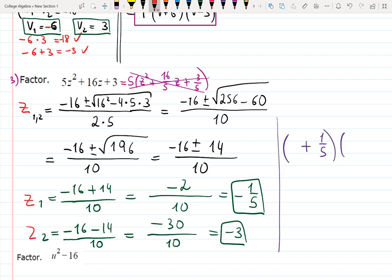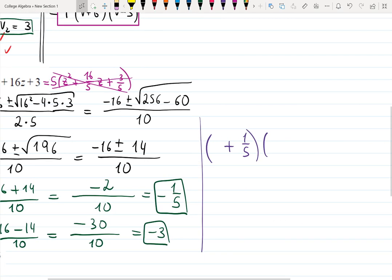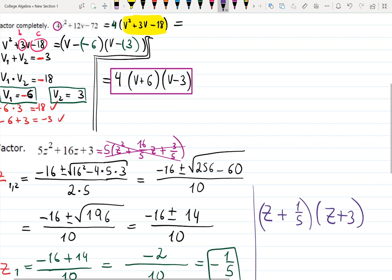So, z1, z2, and here I will have z. z plus 1 fifth, and then z plus 3, because minus minus 3. But remember, we did not factor 5, so we're going to multiply everything by 5. And then, the answer will be, I will put it here, like this.